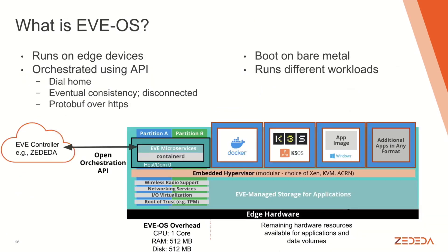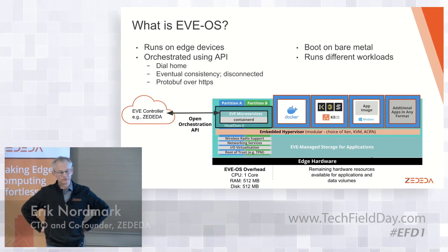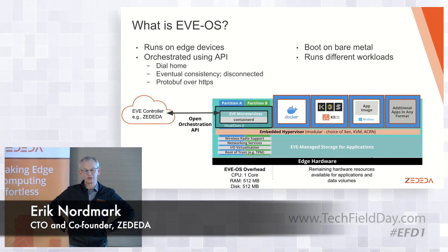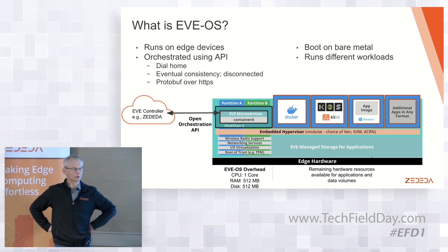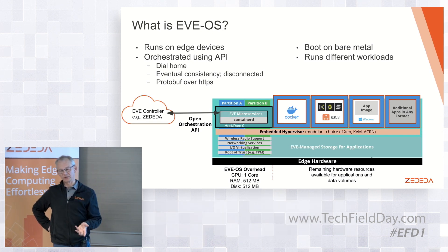What is EvoOS? It runs on these edge devices — we have a few examples up here up front, various sizes. The key thing is that it's actually orchestrated using an API. What this API does is it basically dials home, so you can drop this into any network where you have outbound connectivity over HTTPS to the internet.